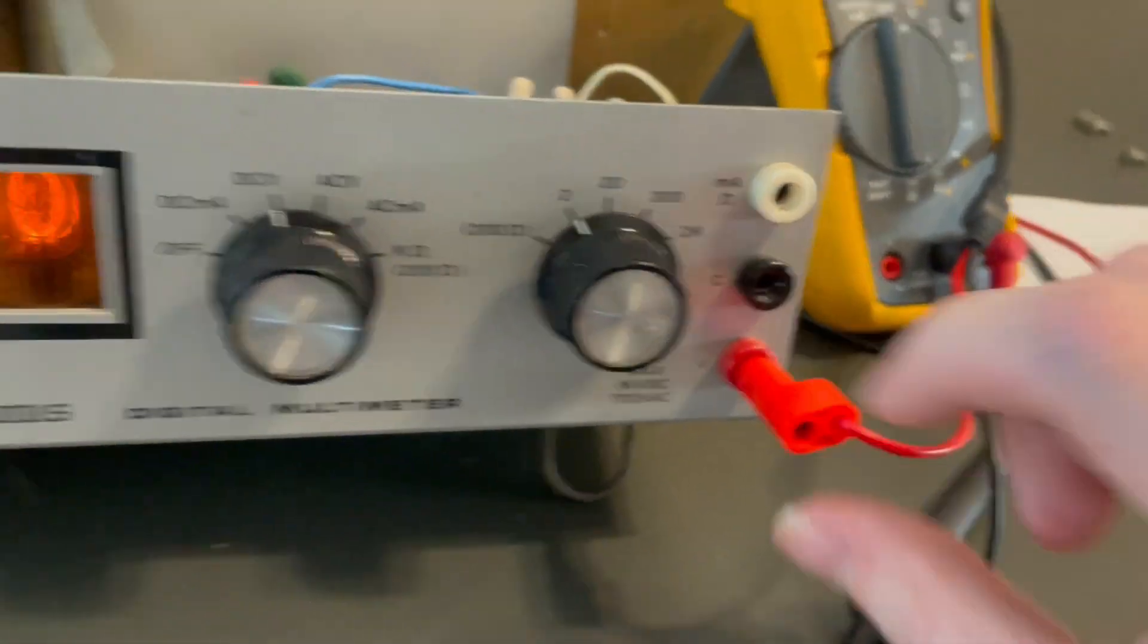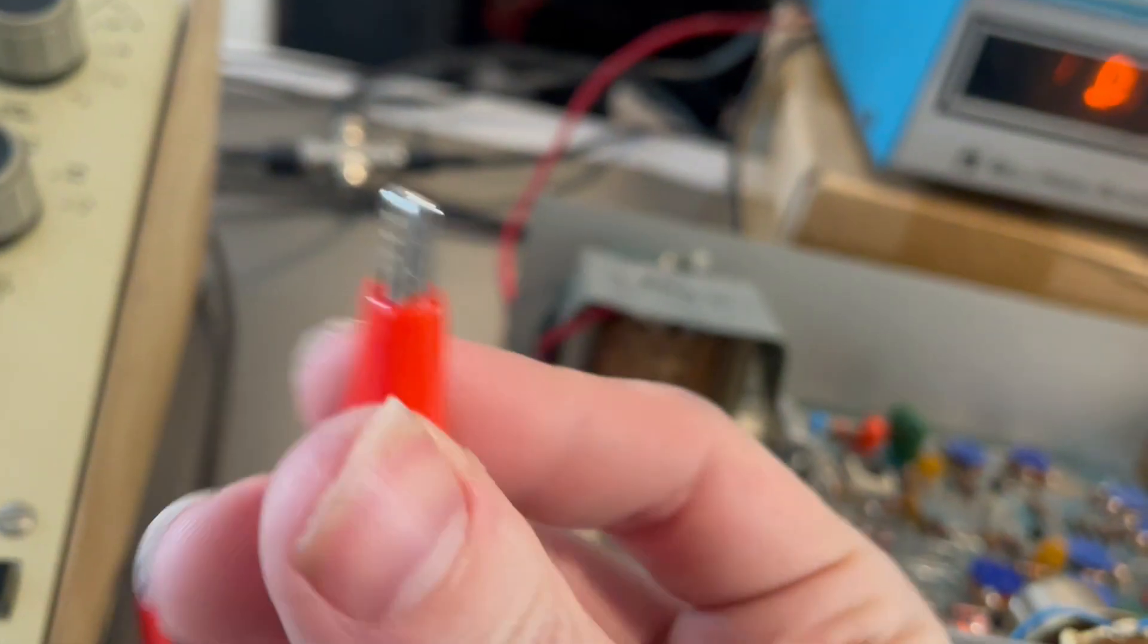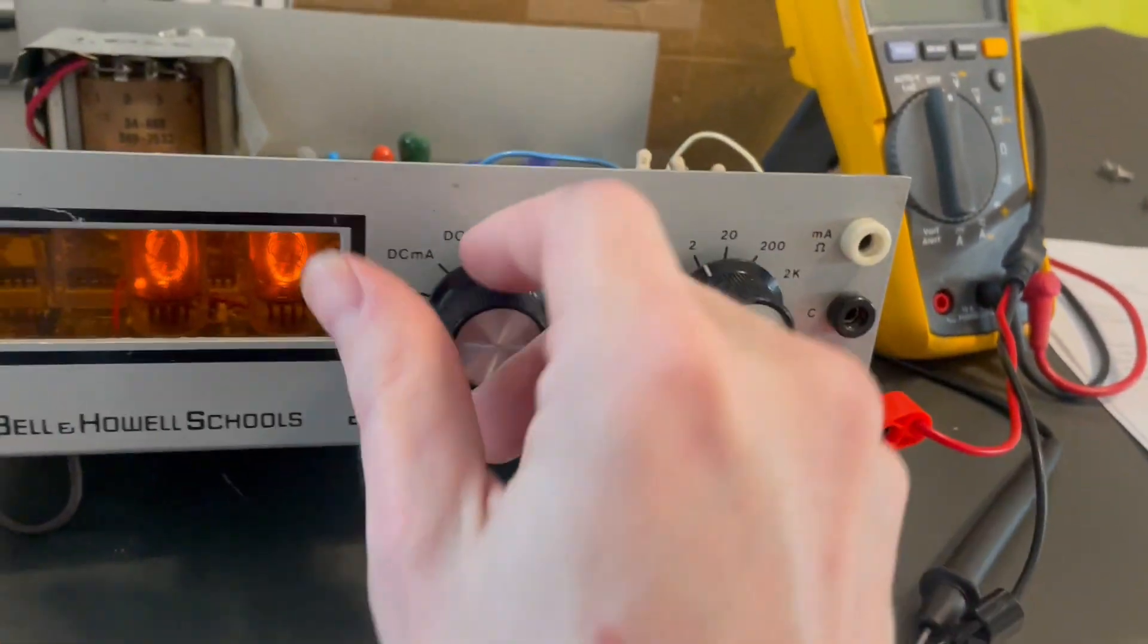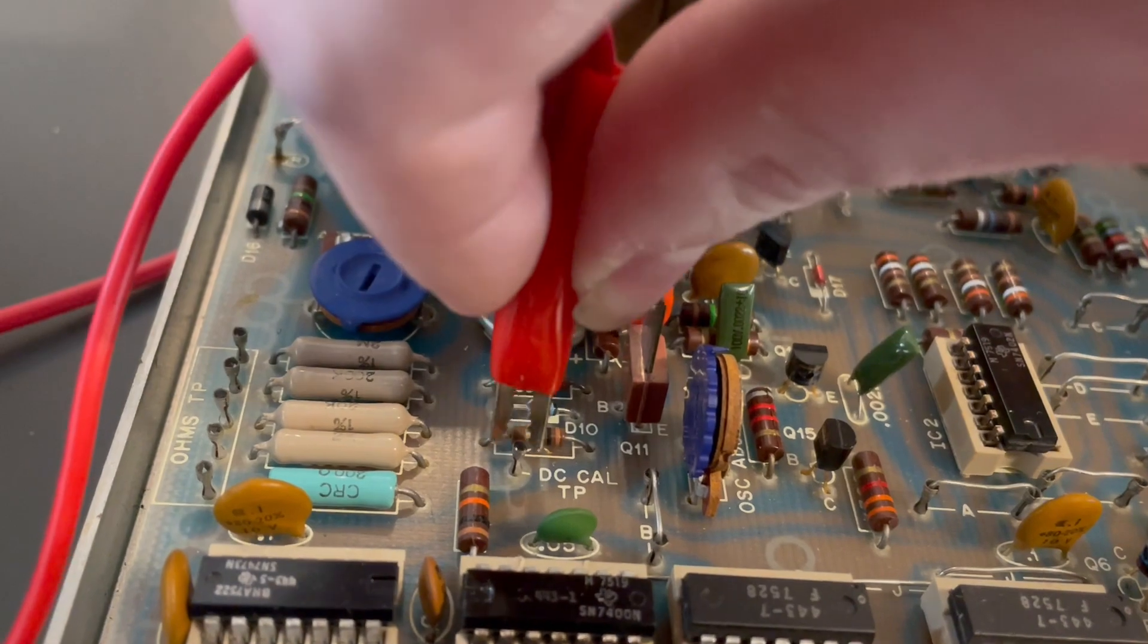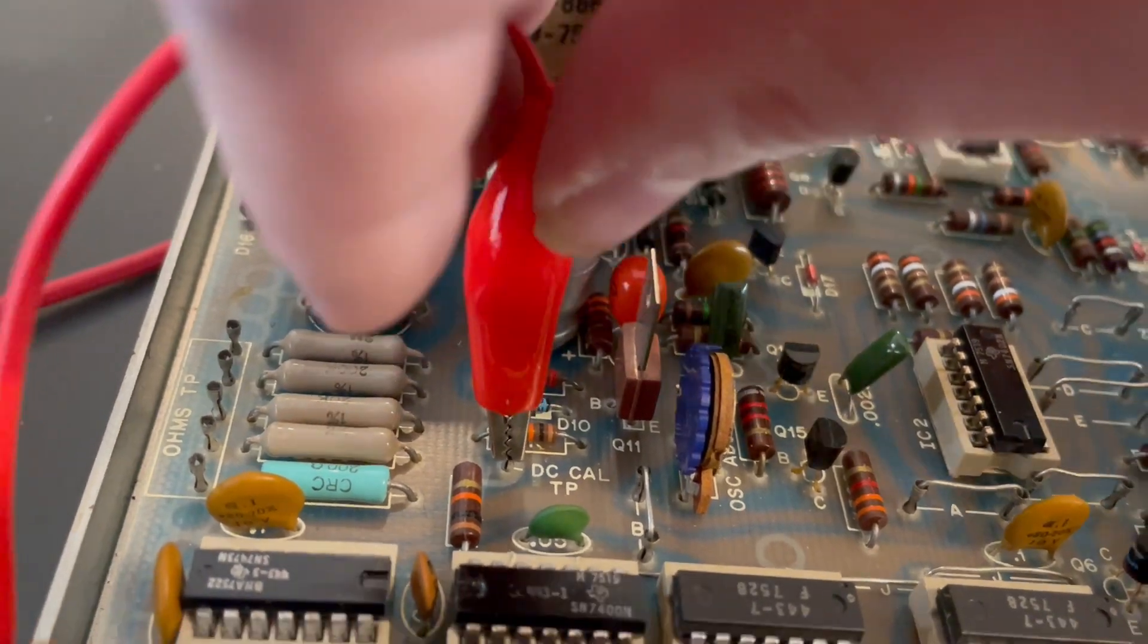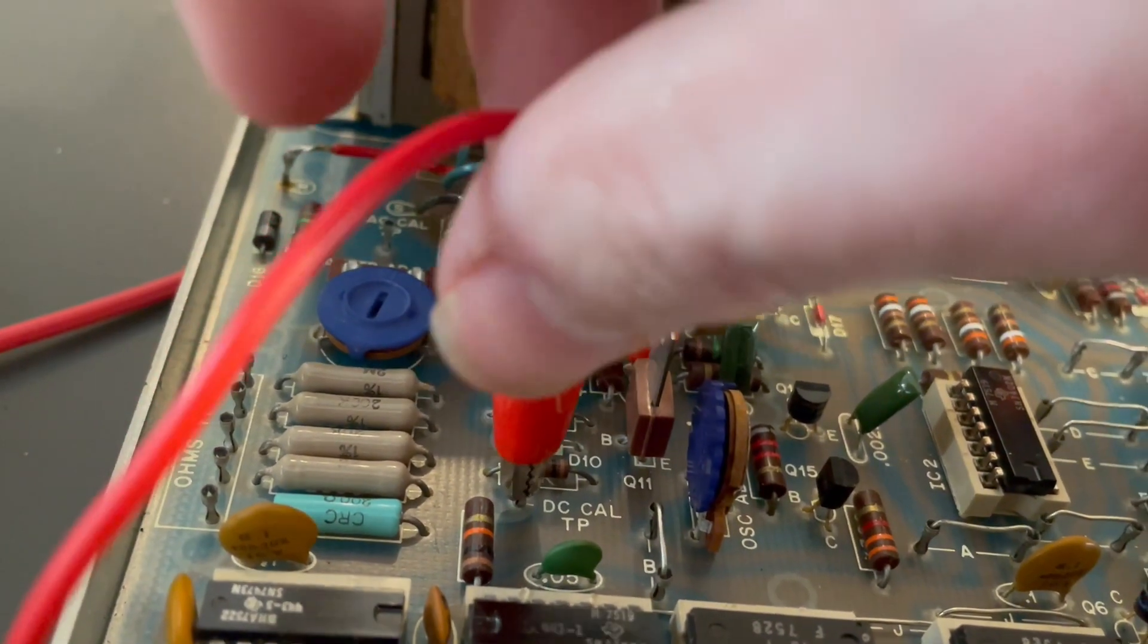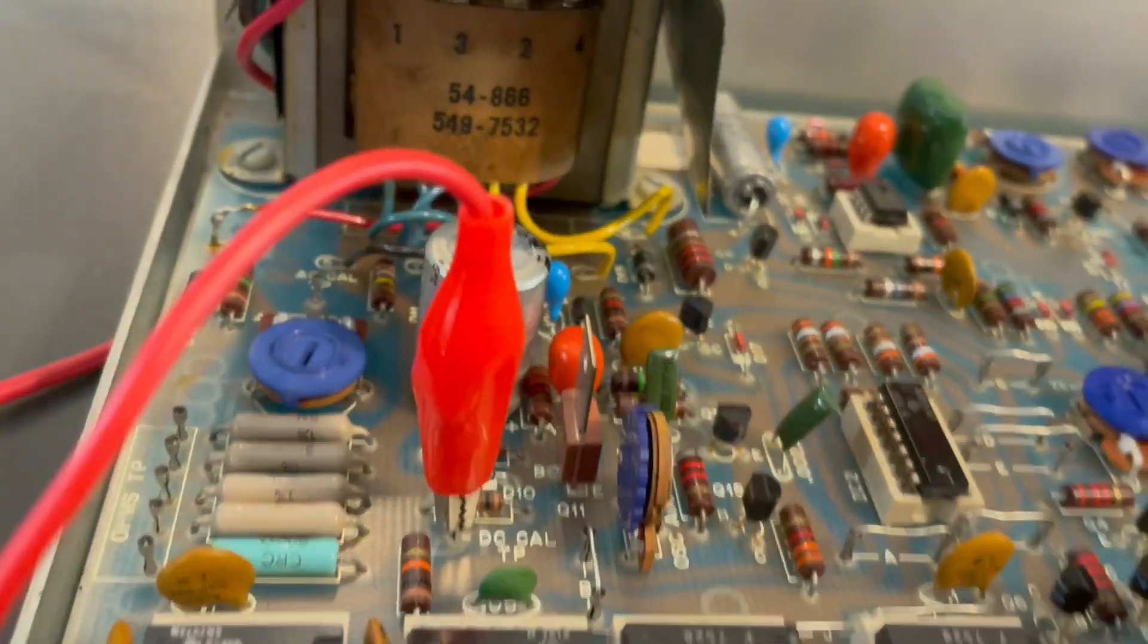Hook that guy up to voltage and then hook this guy up to the test point. I'm just going to go ahead and turn this off for now. While I'm in here, I'm going to connect this up. I'm going to give it a bit of a shake to get through whatever corrosion might be on that pin.